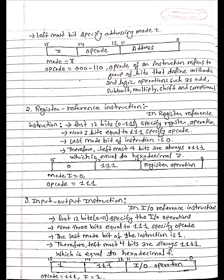Register reference instruction. In register reference instruction, first 12 bits (0 to 11) specify register operation. Next three bits equal to 111 specify opcode. Last mode bit of instruction is 0. Therefore, leftmost 4 bits are always 0111, which is equal to hexadecimal 7.